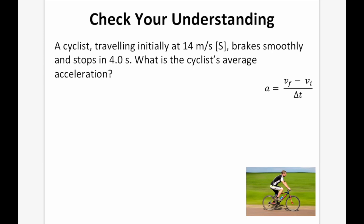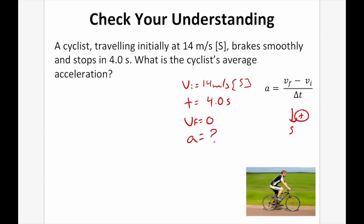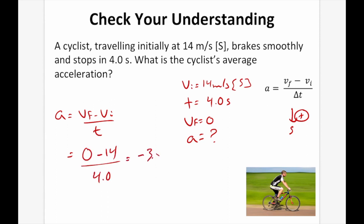A cyclist traveling initially at 14 m/s south brakes smoothly and stops in 4.0 seconds. Taking south as positive, vi = 14 m/s, vf = 0, t = 4.0 s. Using a = (vf − vi)/t = (0 − 14)/4.0 = −3.5 m/s². Since south was positive and the result is negative, the final answer is 3.5 m/s² north.